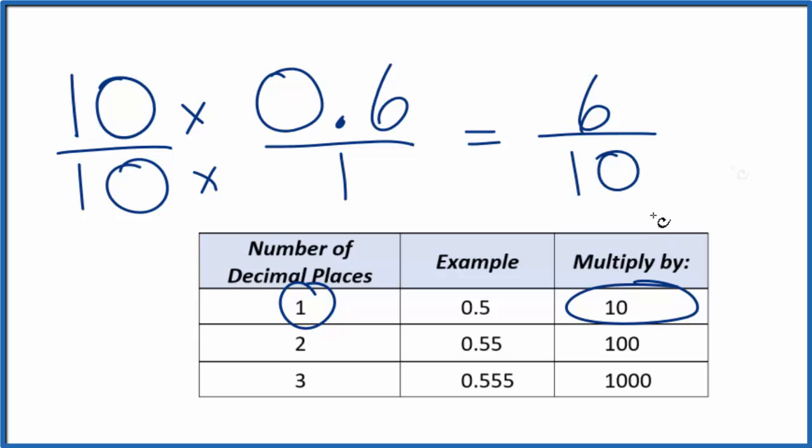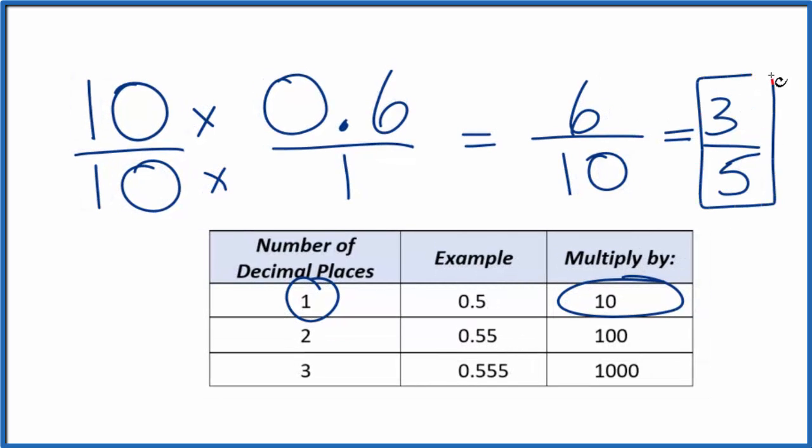Now we have a fraction. We can reduce this further. 2 goes into 6 three times. 2 goes into 10 five times. So the simplest form is 3 fifths.